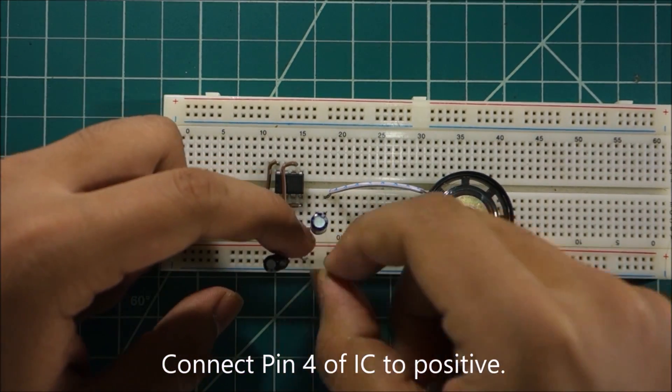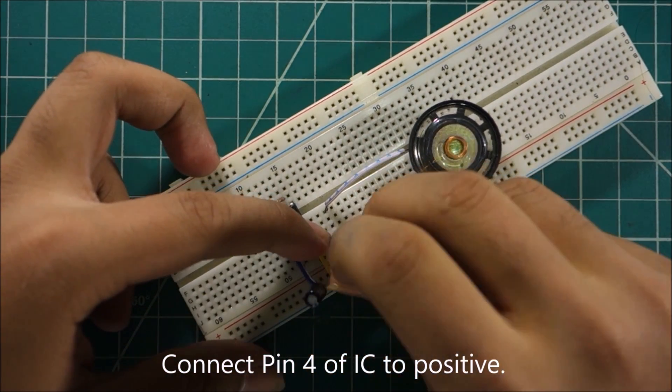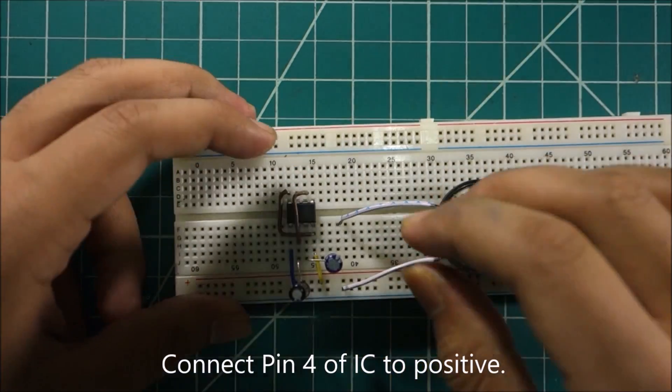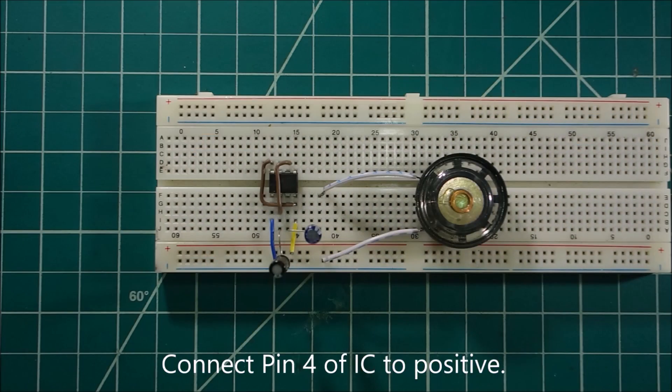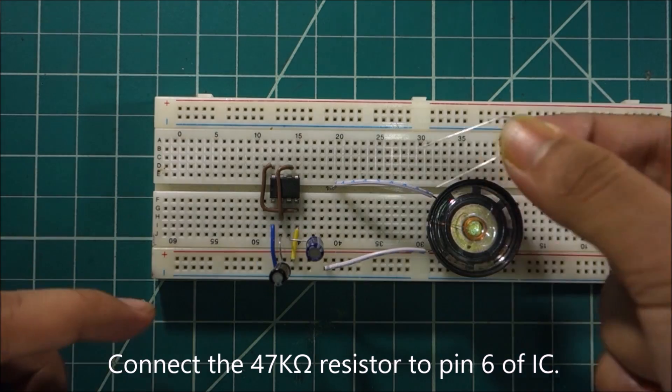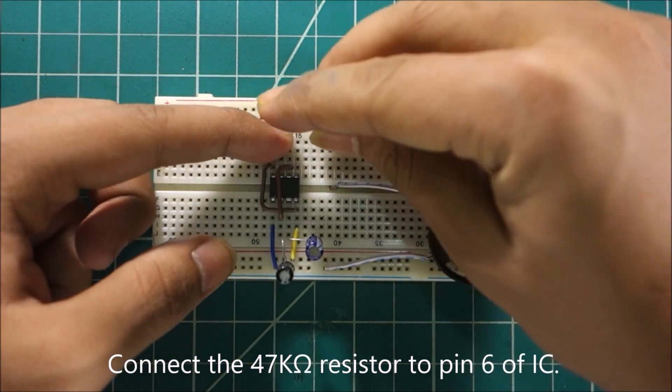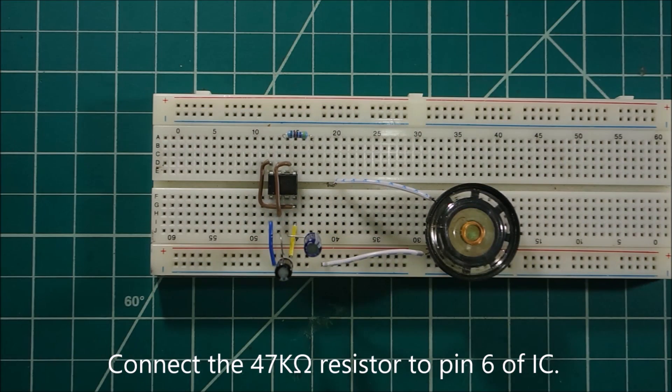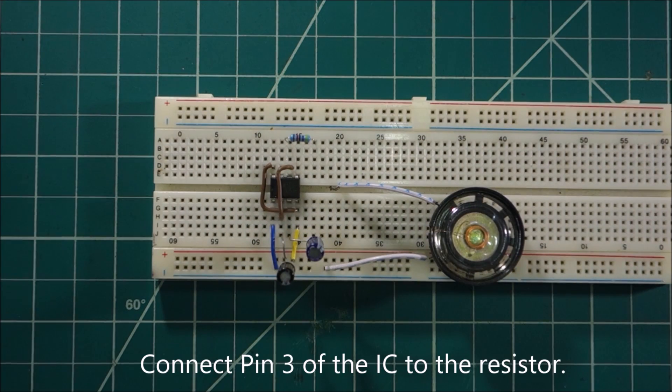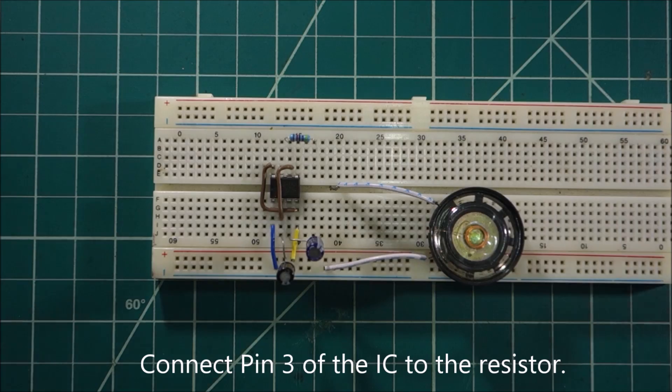Connect pin 4 of the IC to positive rail. Connect the 47 kohm resistor to pin 6 of the IC. Connect pin 3 of the IC to the resistor.